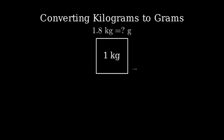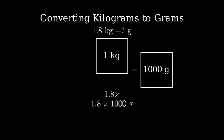Here we have 1 kilogram, which equals 1000 grams. This is our basic conversion factor. Now if we have 1.8 kilograms, we need to multiply our conversion by 1.8. This means we're taking 1.8 times 1000 grams.